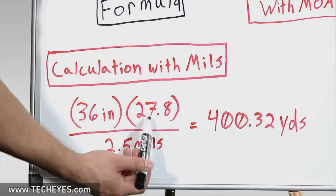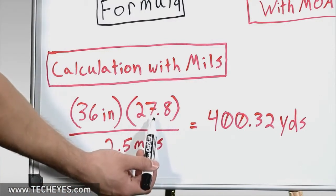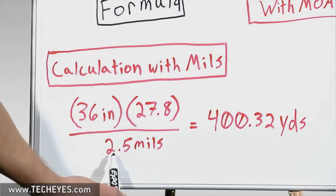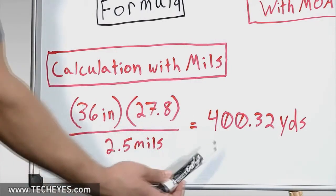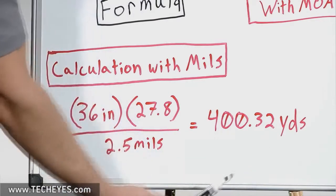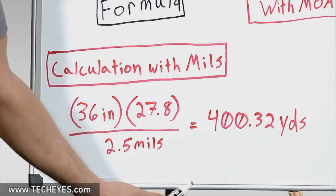We use our number, in this case, 27.8. This is the number that keeps our inches in relation to our mils to give us an accurate yardage. When we do this math, we see that we're given 400.32 yards, or 400 yards for the sake of simplicity.